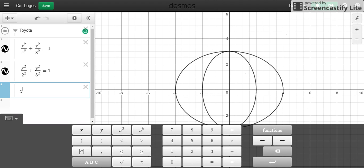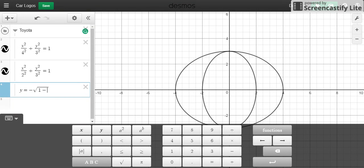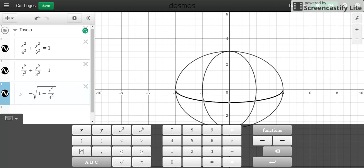Actually, I got it wrong. It's going to be negative square root of one minus x squared. This one has to go all the way to the end. So it's going to be divided by four squared. I'm going to move this up a little bit more. I'm going to say y is going to be less than 0.563.